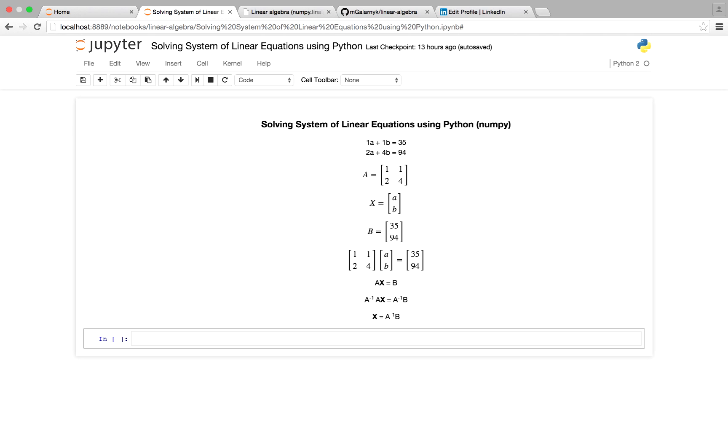So the first step to solving system of linear equations using Python is to put into matrix form. So in our equation 1a plus 1b equals 35, the coefficients 1 and 1 in 1a plus 1b will become the coefficients going across the first row of our matrix A, 1, 1.